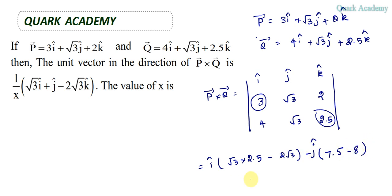And next one is k cap. For k cap, again we should not consider this column and this row, so we have to find the product of these two things and subtract with product of these two. So we will get 3 root 3 minus 4 root 3.